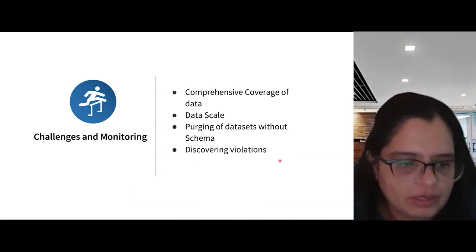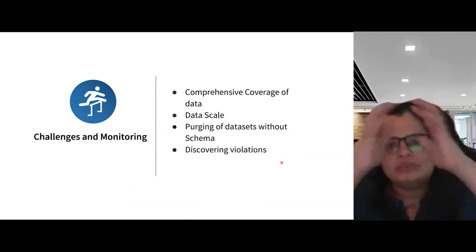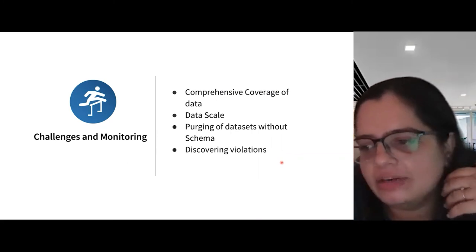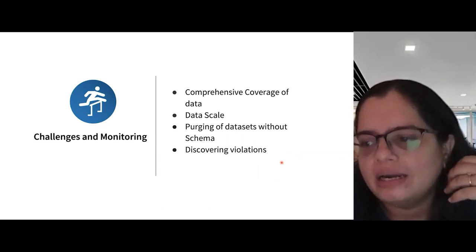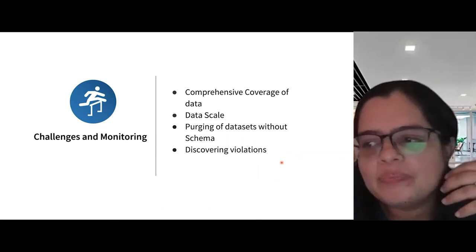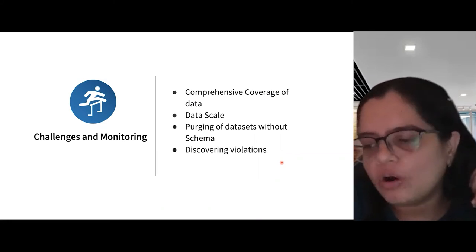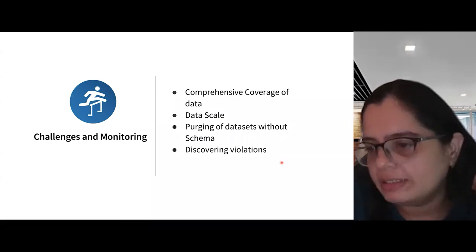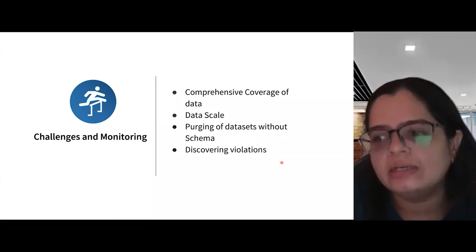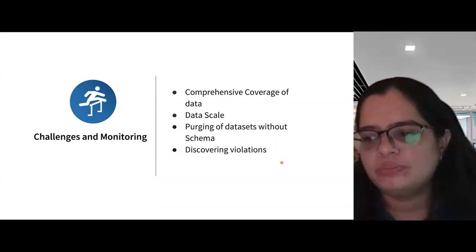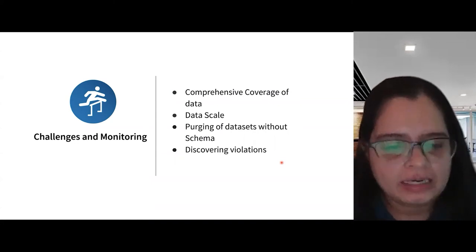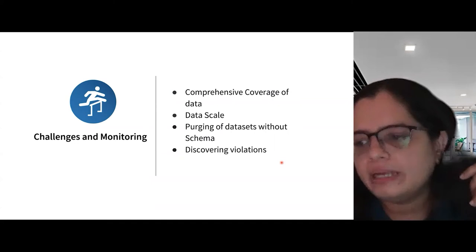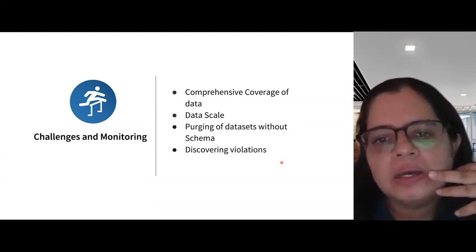Now let's talk about some of the challenges we have faced. The first and most important is comprehensive coverage of data. In offline data, it's tricky because we have semi-structured data, unstructured data, many file formats, and table formats like Iceberg and Hive. It's very important that all data residing there is compliant — either deleted within 30 days, or restatement is done, or manual purging is done. This is all tracked in a real-time dashboard showing the status of all datasets. If we find a leak — for example, a missing annotation or a pipeline problem — appropriate action is taken and tickets are raised immediately.